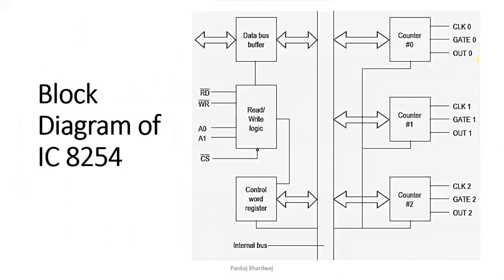The block diagram includes an internal bus for the 8254 or 8253. Similar to the 8255, there is a data bus buffer to connect the internal bus of the 8254 or 8253 to the data bus of the microprocessor, allowing data to flow either to or from the 8085 microprocessor.